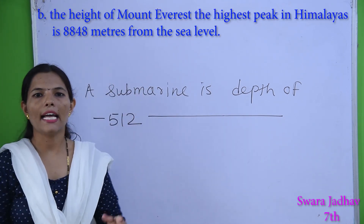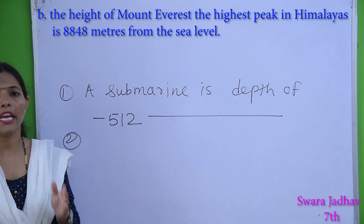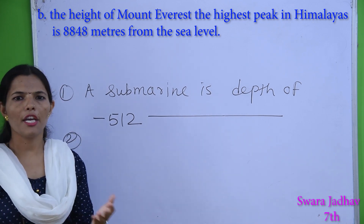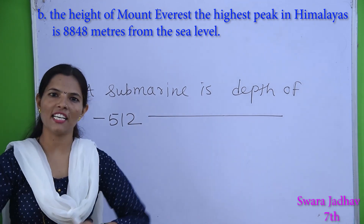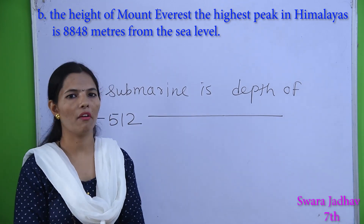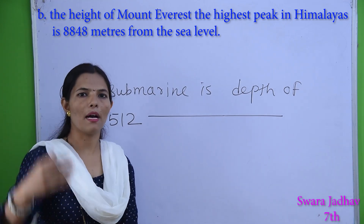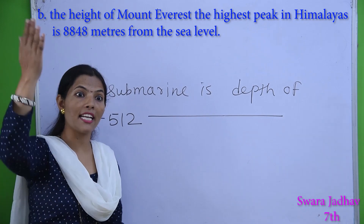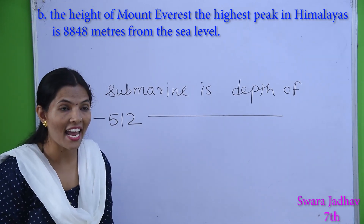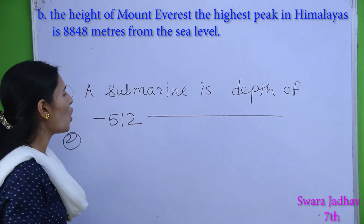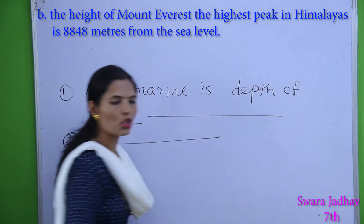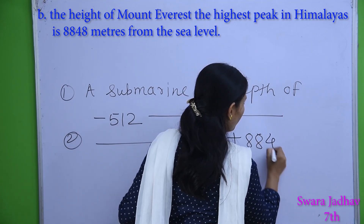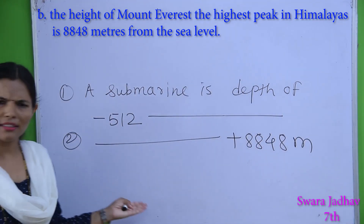The next part: the height of Mount Everest, which is the highest peak in the Himalayas, is 8848 meters from sea level. Mount Everest is above sea level, so we use a positive sign. The answer is: the height of Mount Everest is plus 8848 meters from the sea level. So simple.